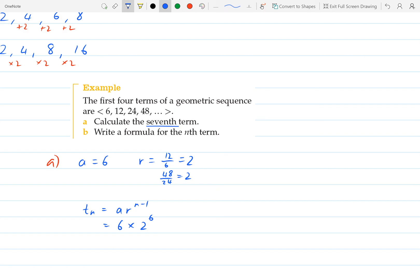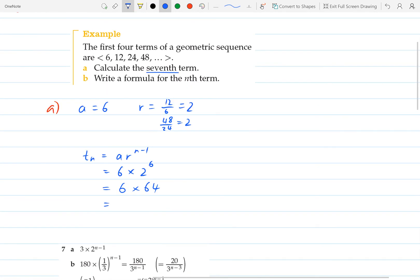And so the formula says that Tn equals a times r to the power of n minus 1. So that's going to be 6 times 2 to the power of 6. So 2 times 2 is 4, times 2 is 8, times 2 is 16, times 2 is 32, times 2 is 64. So that's going to be 6 times 64. And that is going to be, without a calculator, this is a little bit hard. So that would be 360 plus 24, so that will be 384.